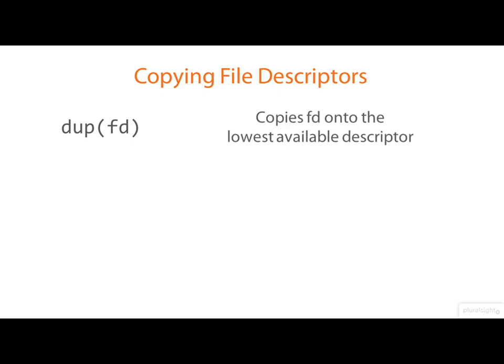Dup2 does the same job, but you actually get to specify via that second argument which descriptor you want to duplicate onto. If that descriptor is already open, it will get closed first. Notice that after calling dup or dup2, these two file descriptors are exactly equivalent.